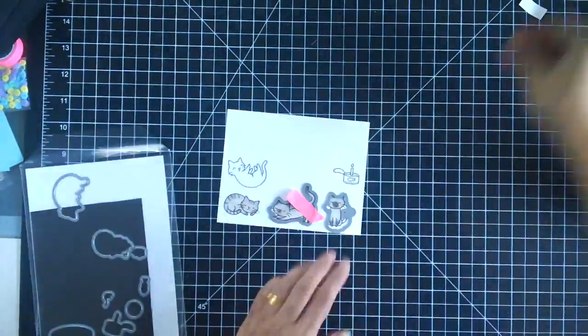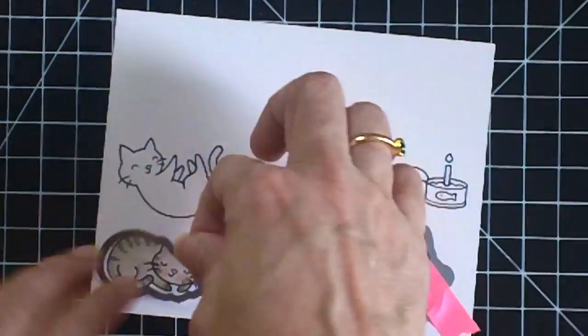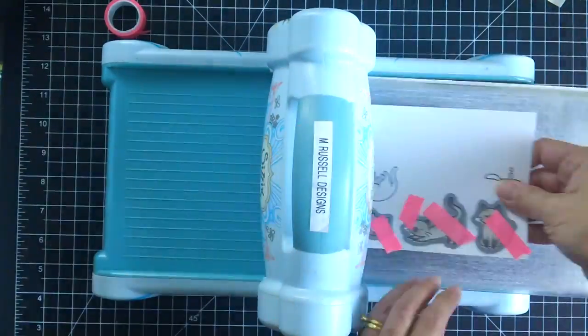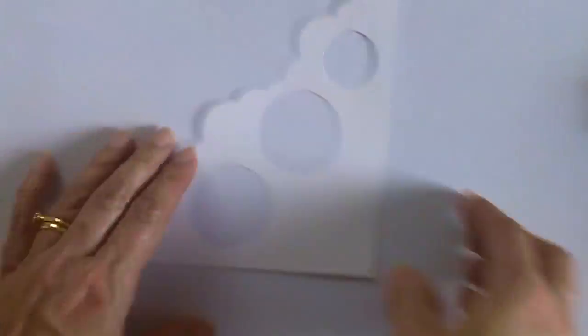Now I'm going to use my coordinating dies to die cut the images I just colored. I'm using my post-it tape here again to just keep them in place so that it doesn't shift when it goes through my big shot machine.